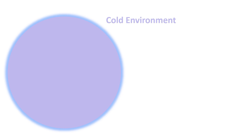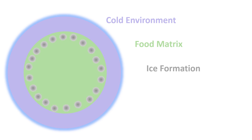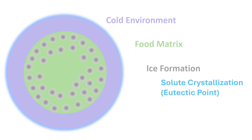Now we can understand physically the maximal freeze concentration condition in frozen foods. First, consider a cold environment — for example, minus 50 degrees C. Place a moist food inside the cold environment; ice will start to form on the surface and continue until the end. In the progressive freeze concentration due to ice formation, the solution becomes saturated and then supersaturated. At this stage, solute can be crystallized, and it is called the eutectic point.